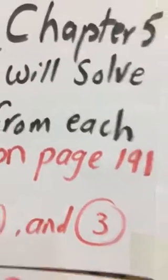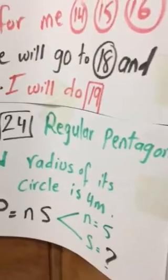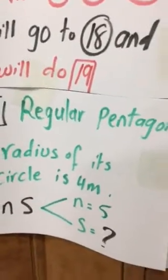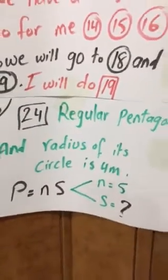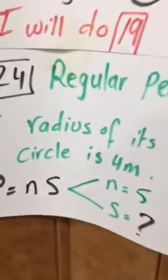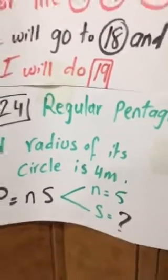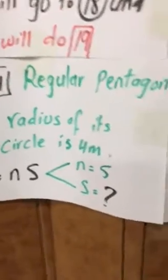So this question is so important, number 24 on page 119. As you know, all these questions are on page 191. We have information that we have a regular pentagon. No problem, that means n is 5. But the problem is s is unknown. He's only given us a radius of its circle, radius, it means r. So how can we use this fact to find s?